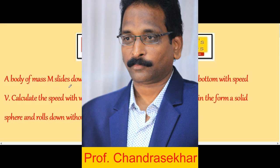A body of mass m slides down a smooth inclined plane and reaches the bottom with speed v. Calculate the speed with which this body reaches the bottom if it was in the form of a solid sphere and rolls down without slipping. In the first case the body slides down and gains velocity v; in the second case the body rolls down — what is the final speed?